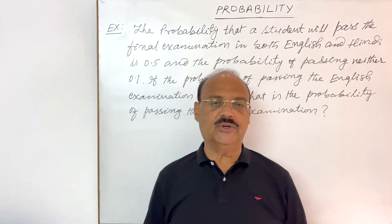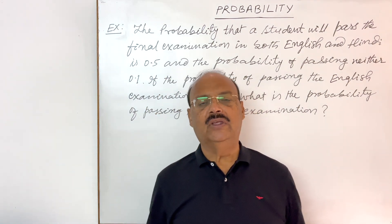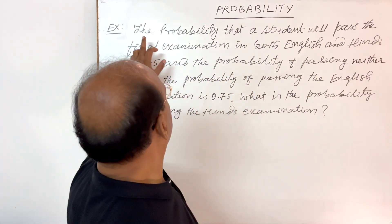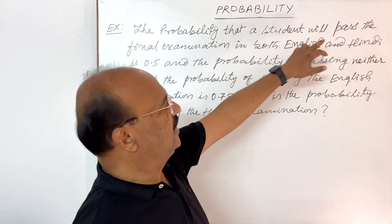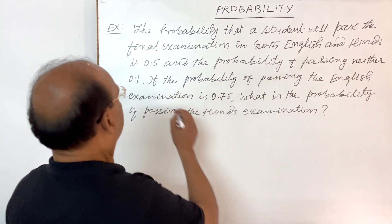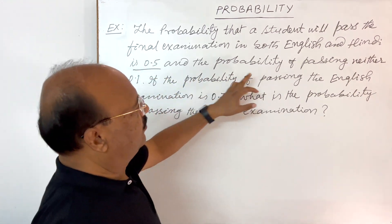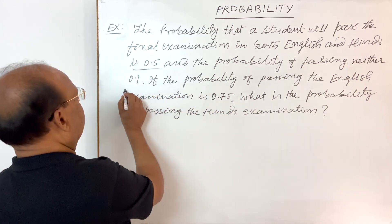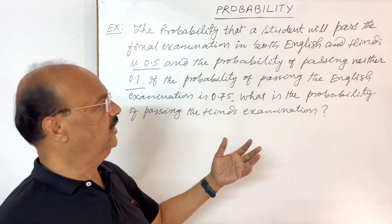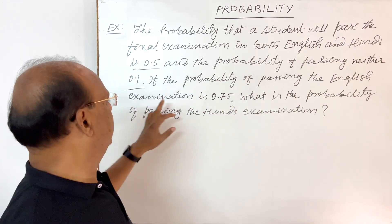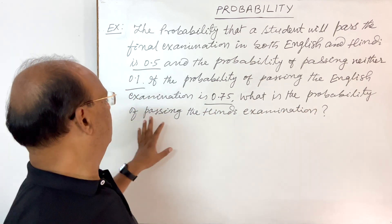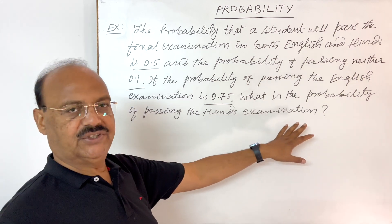Welcome students. Let us see a very important question from the topic probability. The question has been taken from the NCRT book of standard 11. The probability that a student will pass the final examination in both English and Hindi is 0.5, and the probability of passing neither is 0.1. If the probability of passing the English examination is 0.75, what is the probability of passing the Hindi examination?